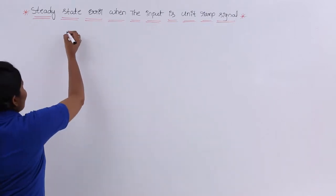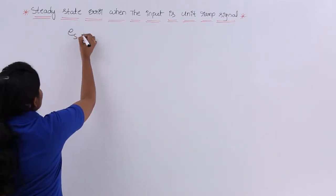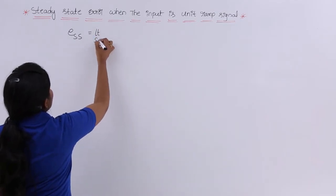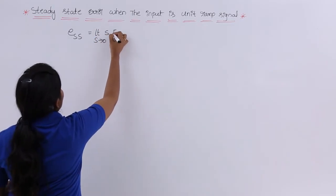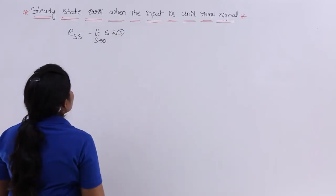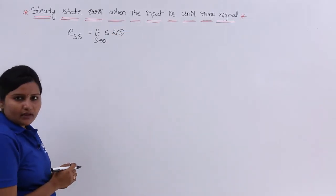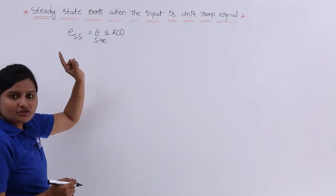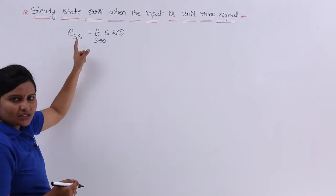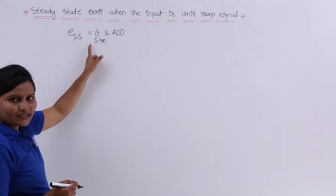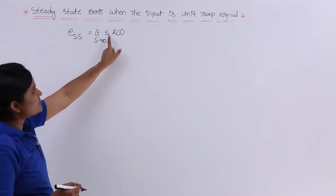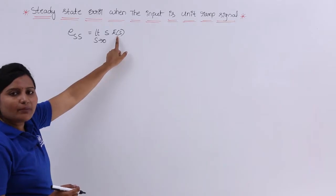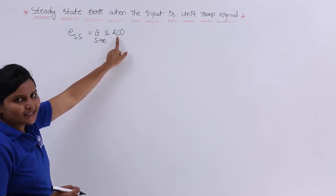According to that analysis, ESS is equivalent to the limit as S tends to 0 of S into E(S). This is the steady state error formula according to the final value theorem. You can refer to the video related to steady state error — there we got the steady state error is equivalent to limit S tends to 0 of S into E(S), where E(S) is the Laplace transform of the error signal e(t).